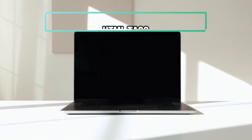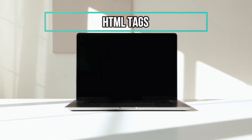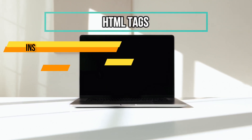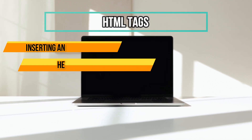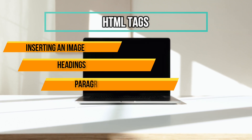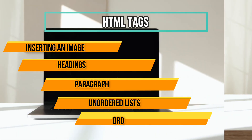In this lesson, learners will be introduced to their first five HTML tags: inserting an image, headings, paragraph, unordered list, and ordered list.